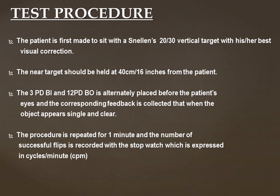So how to perform this test? The patient will be given a Snellen 20/30 visual target and should be wearing their best visual correction. That means we have to record the best Snellen acuity in each eye, and the target has to be held at 40 cm from the patient.